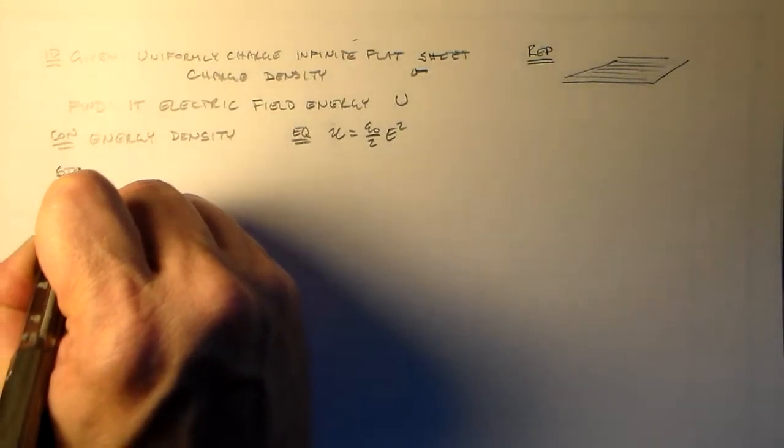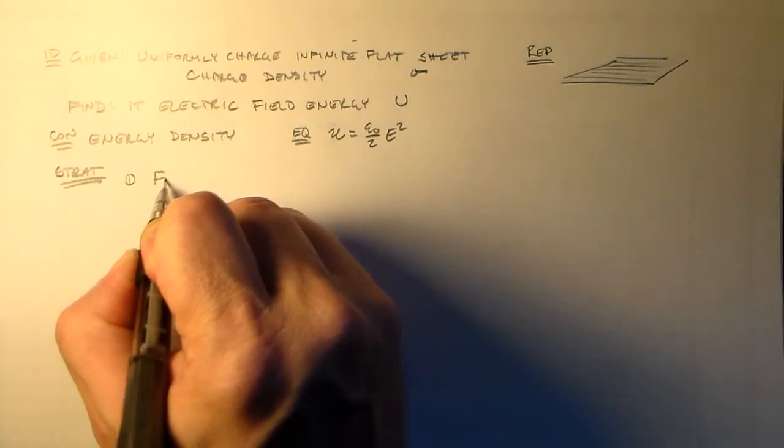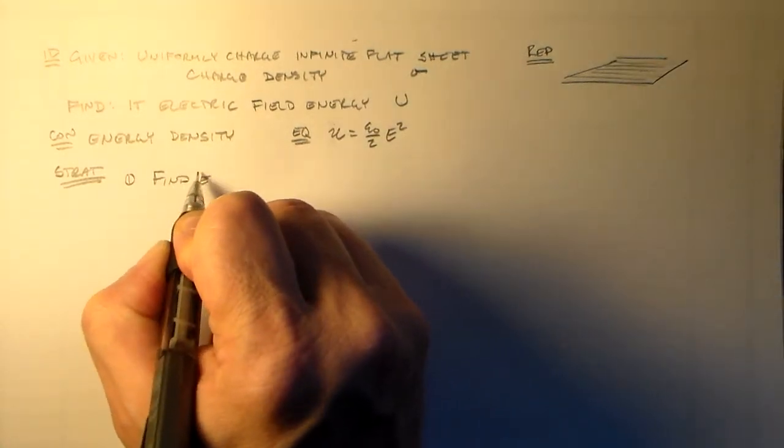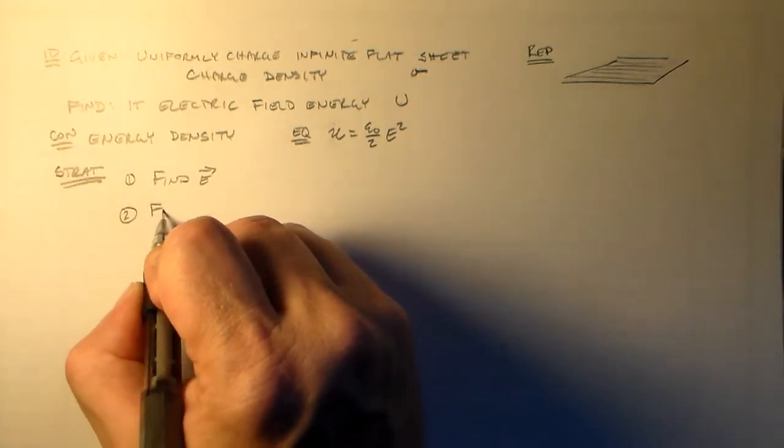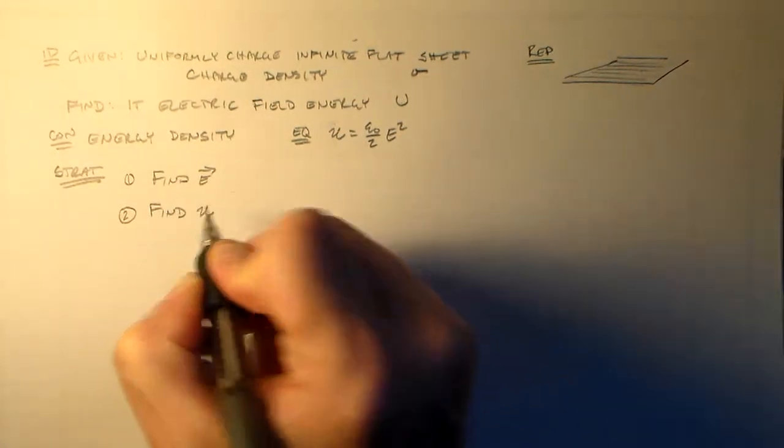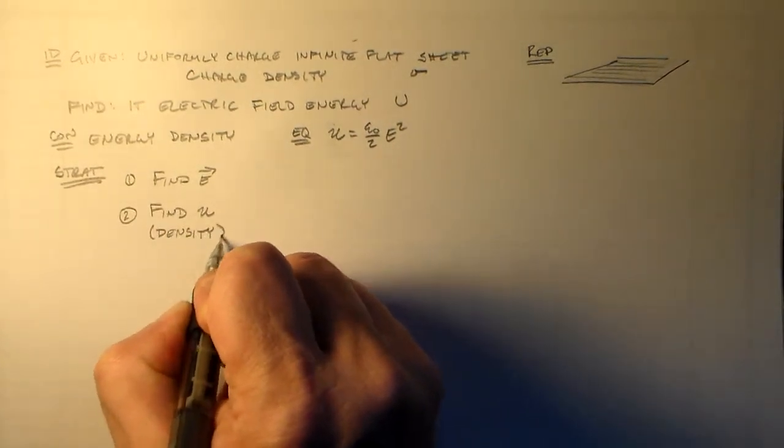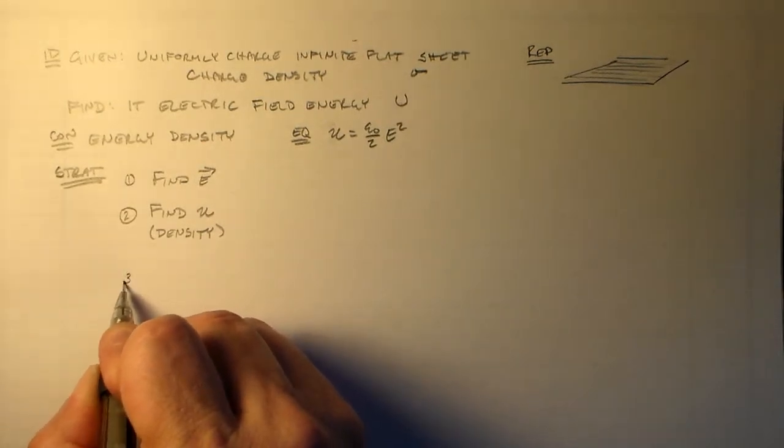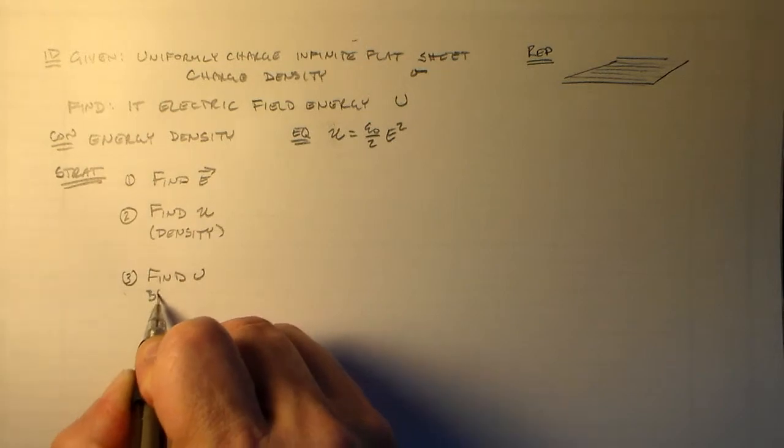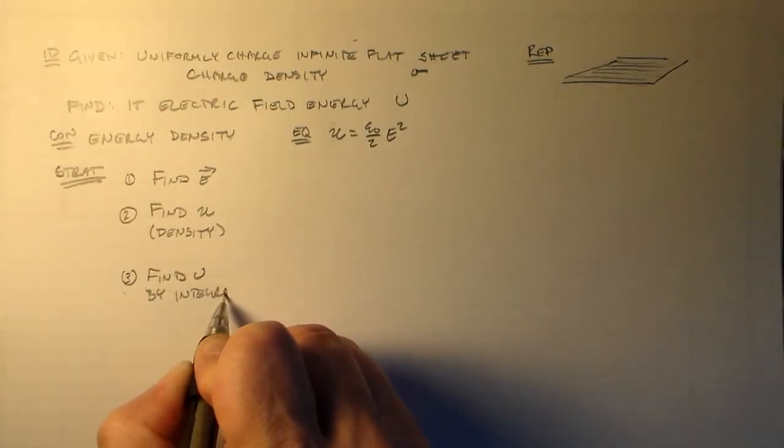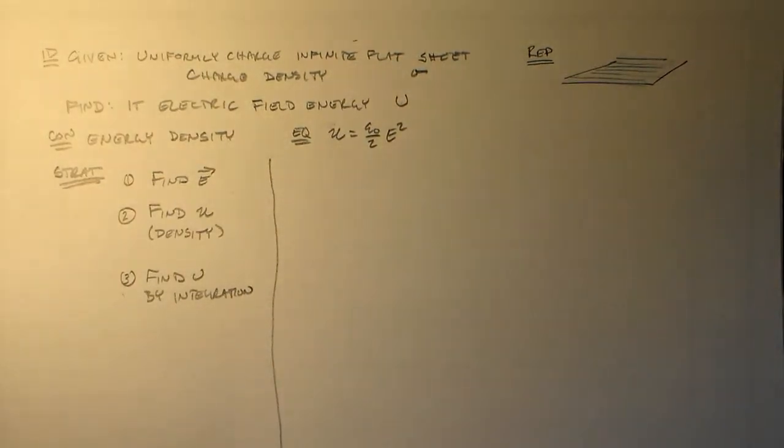And the strategy here is pretty straightforward. Strategy one is to find E. We're not going to spend any time finding E because I've got other videos for that. Then we find those lowercase u, the density, the energy density of the field. And then we find big U by integration. This looks complicated, doesn't it?